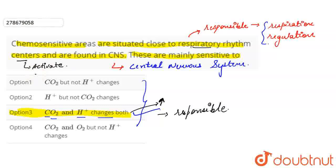And in return, the rhythm center will signal to make necessary adjustments in respiratory process by which these substances can be eliminated. So option 3, which says CO2 and hydrogen plus changes both, is our correct answer.